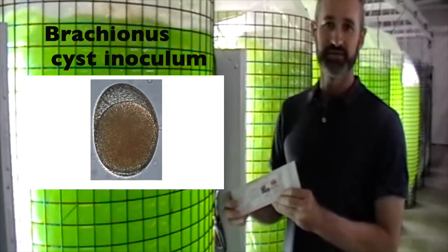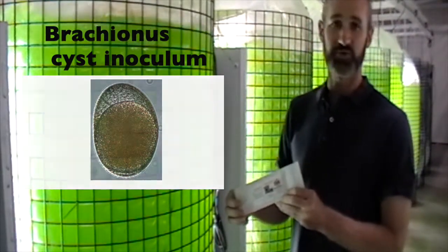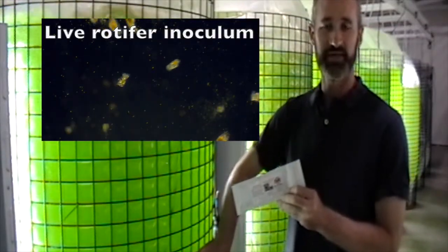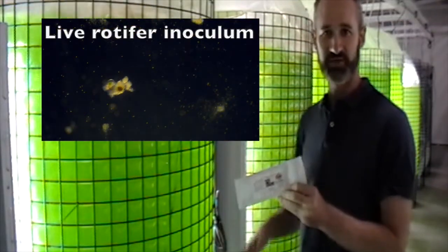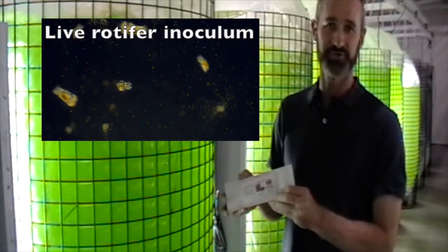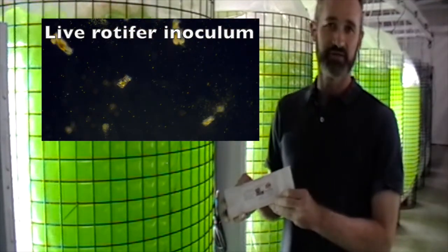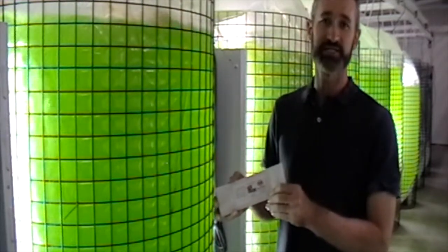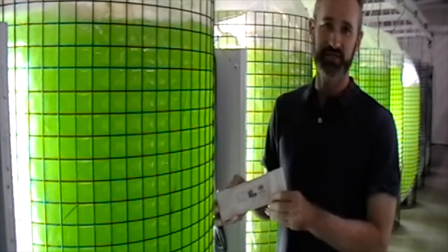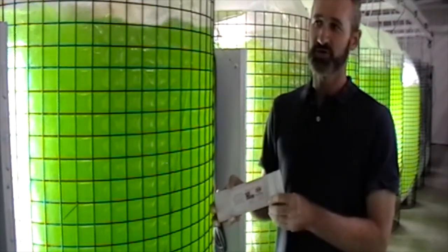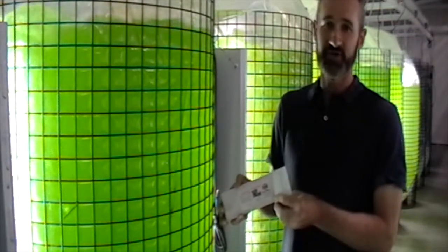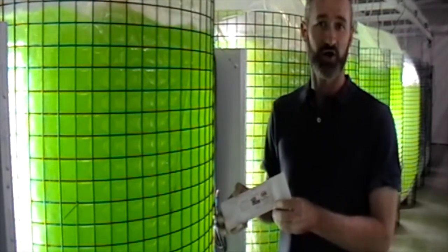In subsequent reactors or bags, we can start with an inoculum from an existing bag, serially starting cultures from previous cultures. It's important that every three or four weeks we restart from cysts as they're clean. Over time in a culture, contamination can develop and also dirt, detritus, debris can build up in the bag, and they can interfere with the proper growth of rotifers.